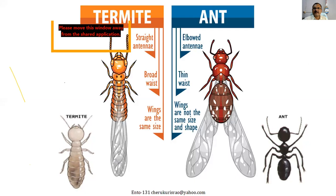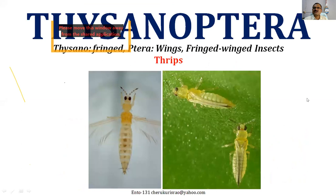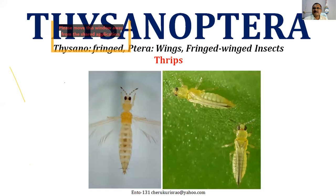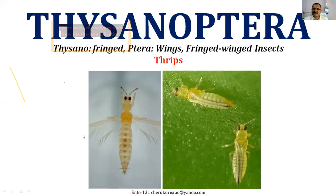Now we enter the next order — Thysanoptera. 'Thysano' means fringed, 'ptera' means wings — so insects with fringed wings. It is very difficult to see the wings of thrips. The common name of insects belonging to Thysanoptera is thrips. They are actually very small — you generally don't see them with the naked eye unless they are flower thrips. They have two pairs of fringed wings, very difficult to see with the naked eye, and are very commonly found in all plants.